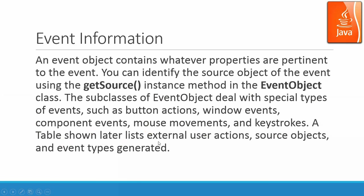A table shown later lists external user actions, source objects, and event types generated. The source object means the button being clicked or being dragged. An event object carries the event information — what kind of event happened.